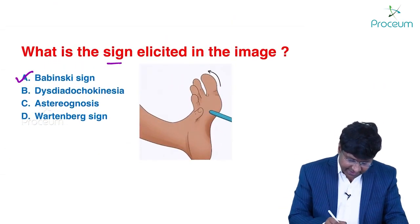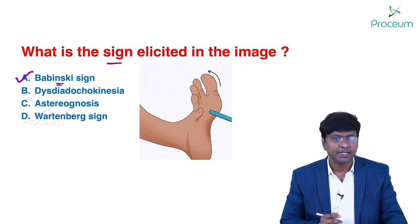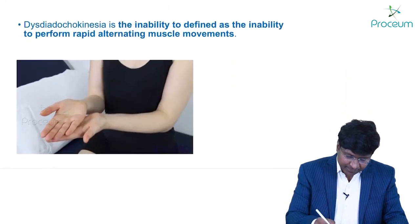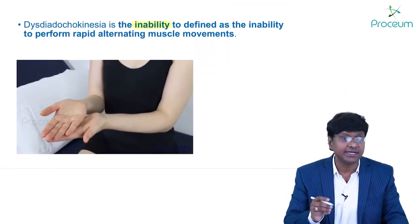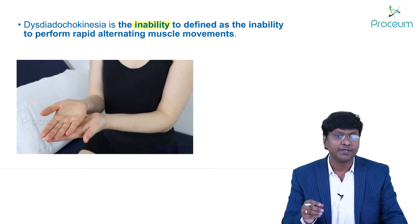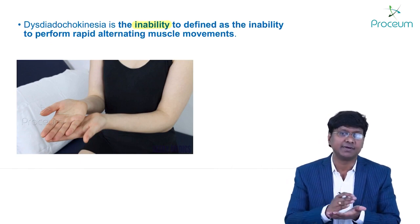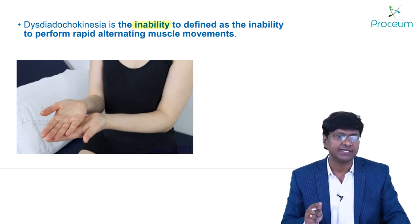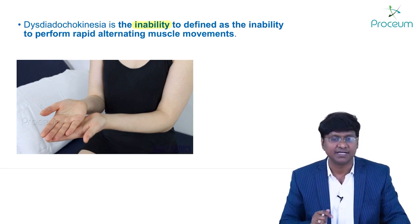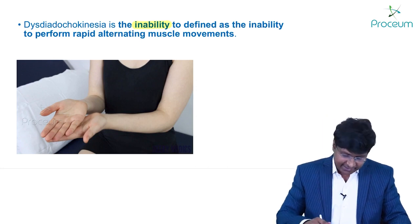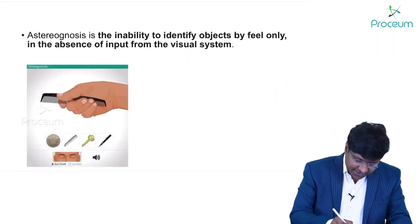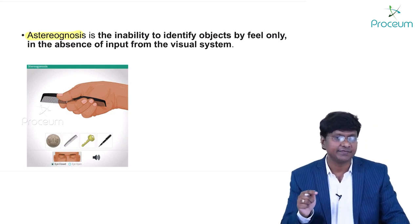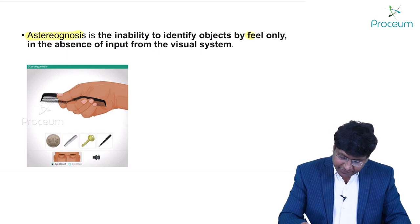The sign elicited is Babinski sign. Dysdiadochokinesia is the inability to perform rapid alternating muscle movements and is a feature of cerebellar lesions. Astereognosis is the inability to identify an object by feel only — for example, if an object is placed in your hand with eyes closed, you should normally be able to identify it; inability to do so is astereognosis.